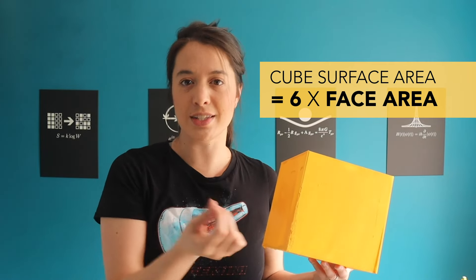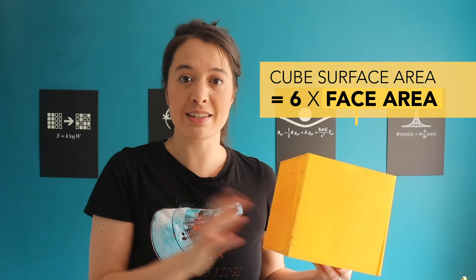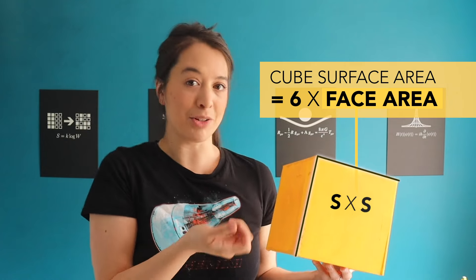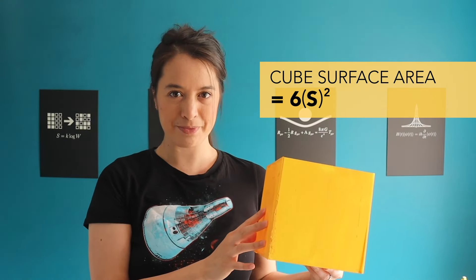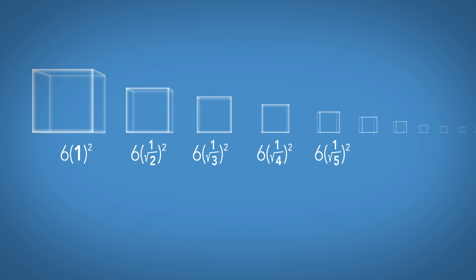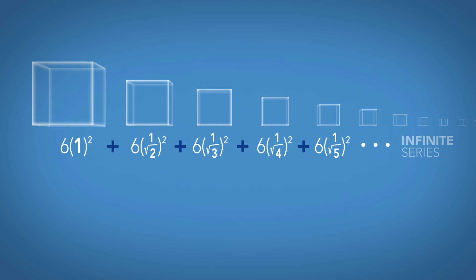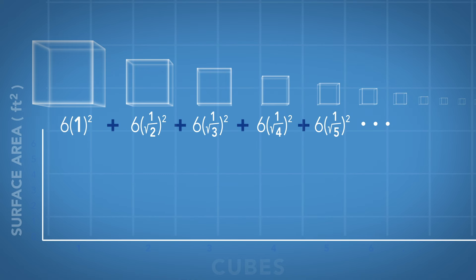Cubes have 6 square faces, so the surface area is just 6 times the area of each face. The area is just one side multiplied by the other, to give us the equation 6s squared. To calculate the total surface area of all the cubes, we just add all of their surface areas together. This gives us an infinite series, the sum of an infinite number of terms. We can get a better sense of what this series is doing if we represent it graphically.